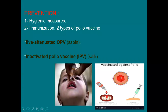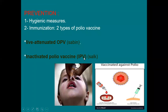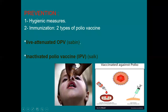For prevention of poliomyelitis, the primary measure is vaccination. There are two types of polio vaccine: the oral polio vaccine, which is a live attenuated vaccine, and the inactivated polio vaccine — the Salk vaccine — which is the injectable type and can be used for immunocompromised patients. Hygienic measures also help limit spread of the virus to young children.